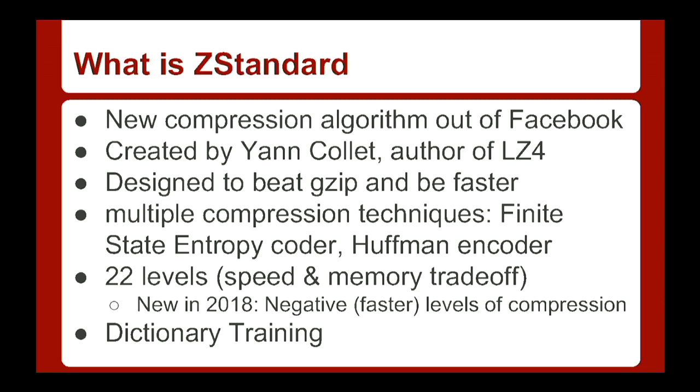When they set out the 22 levels, they made the obvious mistake of not leaving room on the low end. They can always add a level 23, but they'd already defined level 1, so they couldn't make something even faster — which it turns out didn't take them very long to do. Now you can have negative 1, negative 10, negative 100, or negative 100,000, all providing different amounts of compression — less and less as you get more and more negative.